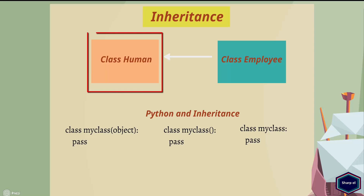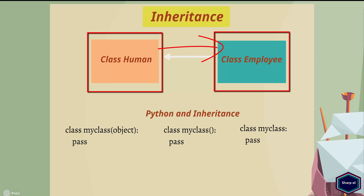Suppose I have a class human, and I would like to have another class employee. Because every employee is also a human, the employee class has a lot of things in common with the human class, like first and last names, age, address, etc. So it would be great if I could reuse all possible methods and attributes of the human class in my employee class. This is achieved with the help of inheritance. This lets you put all the common functionalities in one class and then specialize these functionalities in other classes as needed.